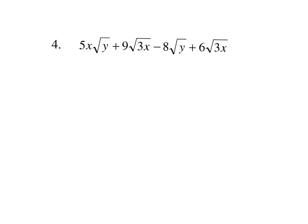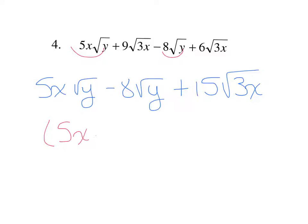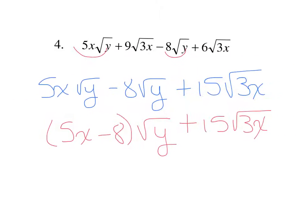On number four I'm looking for anything that has square root of y to add together — that would be these two terms. However when I get ready to add the coefficients I have 5x and negative 8, and they are not like terms. I cannot add 5x and negative 8, so even though they're like radicals I still can't add them because their coefficients do not make like terms. These two terms with square root of 3x I can add, because 9 plus 6 makes 15 square root of 3x. Some people would combine the 5x and the negative 8 into parentheses with the square root of y afterwards — these are identical answers, just a matter of preference.